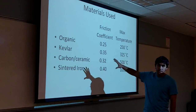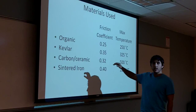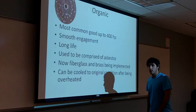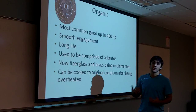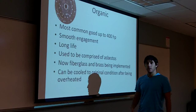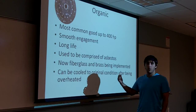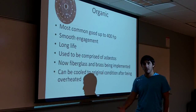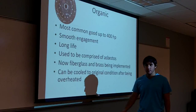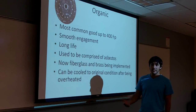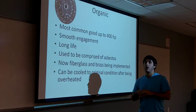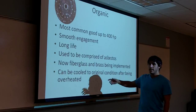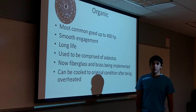The four materials normally found in disc clutches are organic, Kevlar, carbon ceramic, and cinder iron. Organic is the most commonly found in all cars. It can withstand a load up to 400 horsepower, has a very smooth engagement, and a long life. It also has the benefit that if it overheats you can let it cool down and it will restore back to normal without warping, maintaining all contact surfaces needed to transmit torque properly.